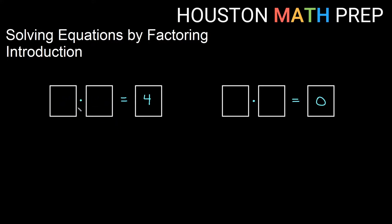I've got two numbers multiplied together equal to four versus two numbers multiplied together to give me zero. If we explore the four situation first, we might think of something easy like one times four — that gives us four. Two times two would give us four. We could even think of eight times a half, which gives us four.